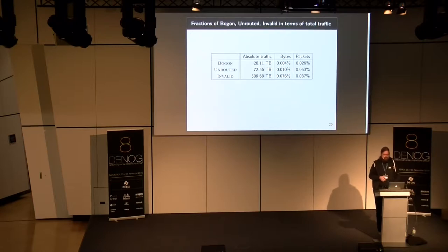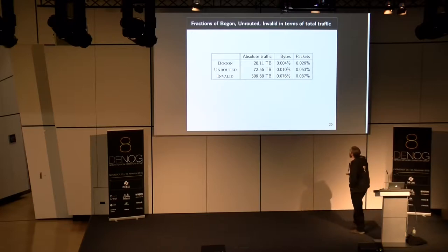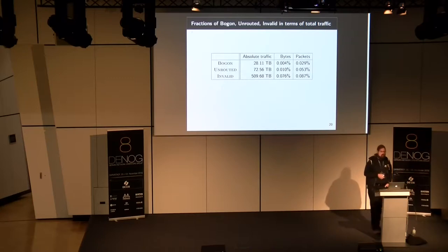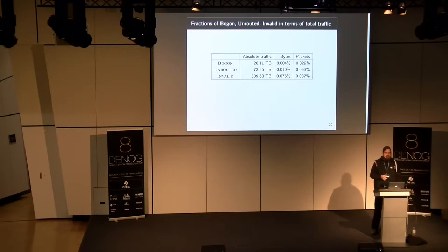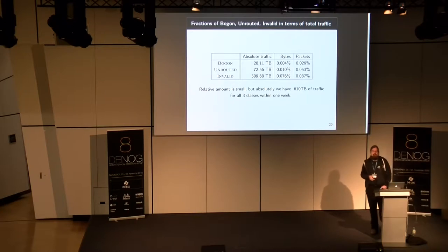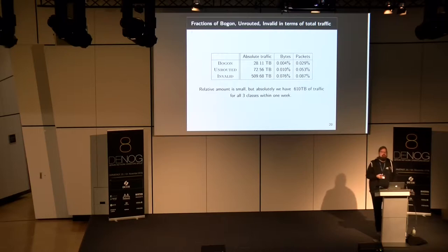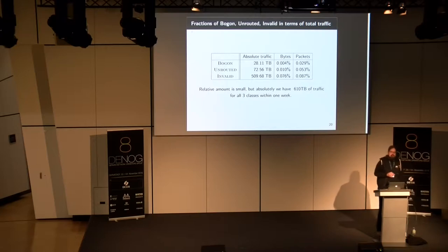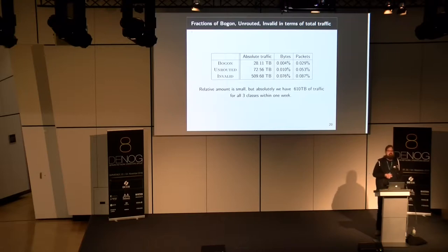Now let's look at the numbers. If you look at the percentages, it's really, really small — less than 1% of invalid, unrouted, and Bogon traffic — but the total number is huge: 610 terabytes of traffic. This is the unamplified traffic that would be used if it were all in an amplification attack. If you imagine this being used for an amplification attack, you have to multiply by the usual amplification factors and then you get a real picture.